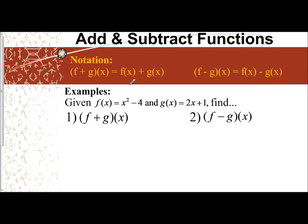I'm given f of x equals x squared minus 4, and g of x equals 2x plus 1. And in number one, I'm asked to take f plus g. So what I'm going to do is take x squared minus 4 and add my g of x, which is 2x plus 1.